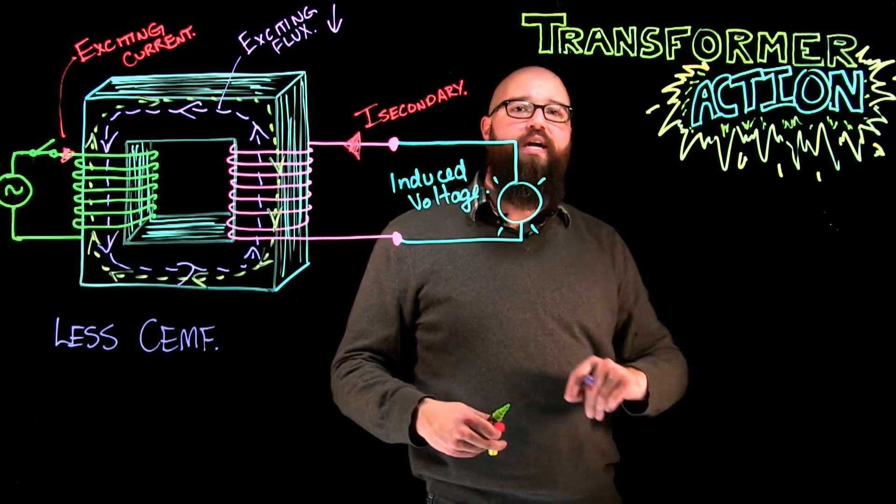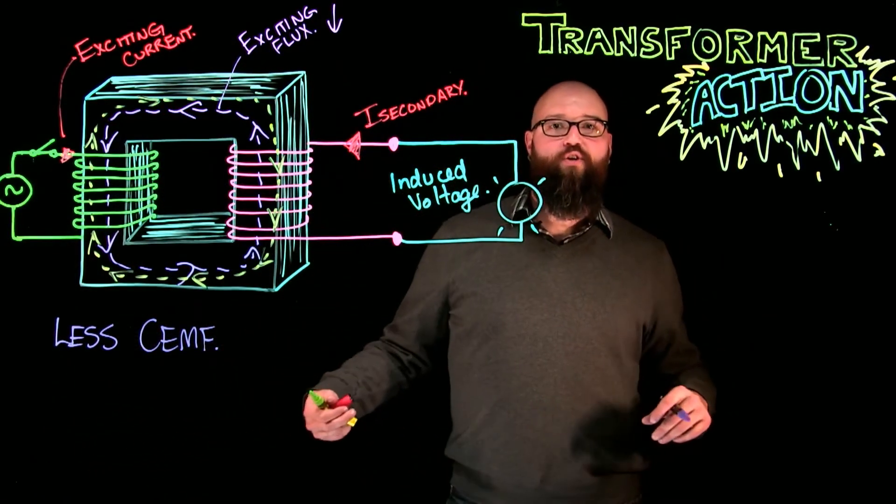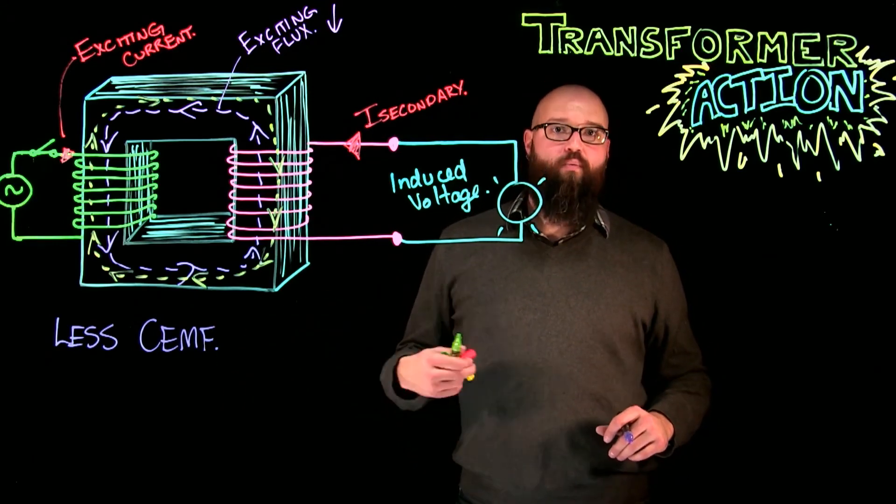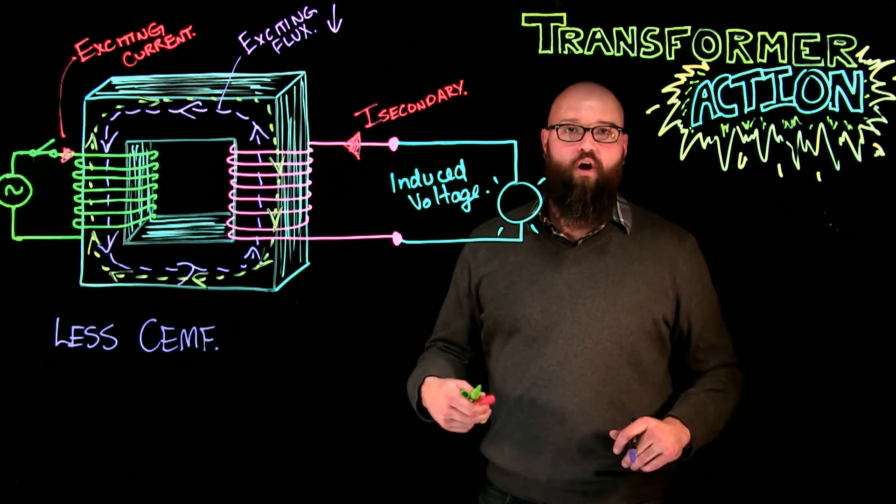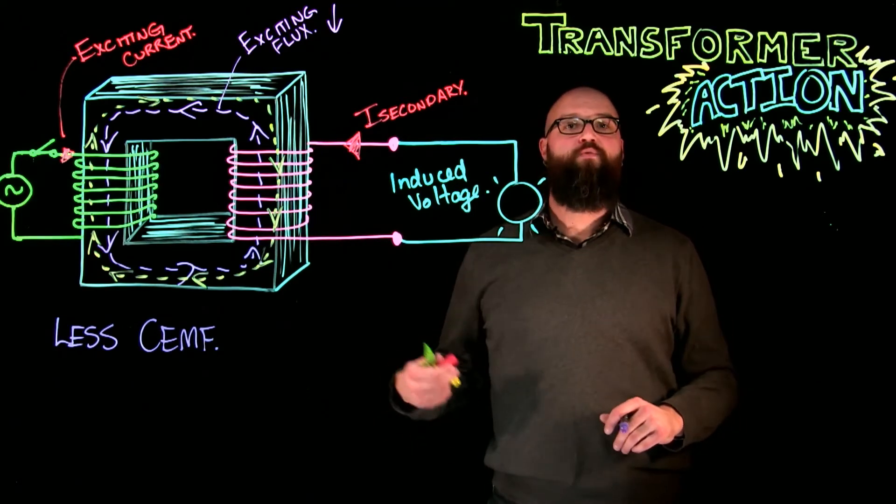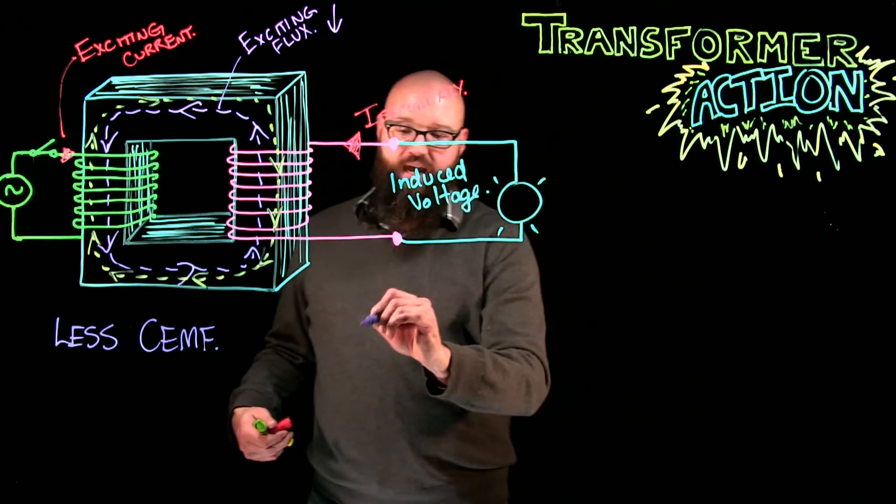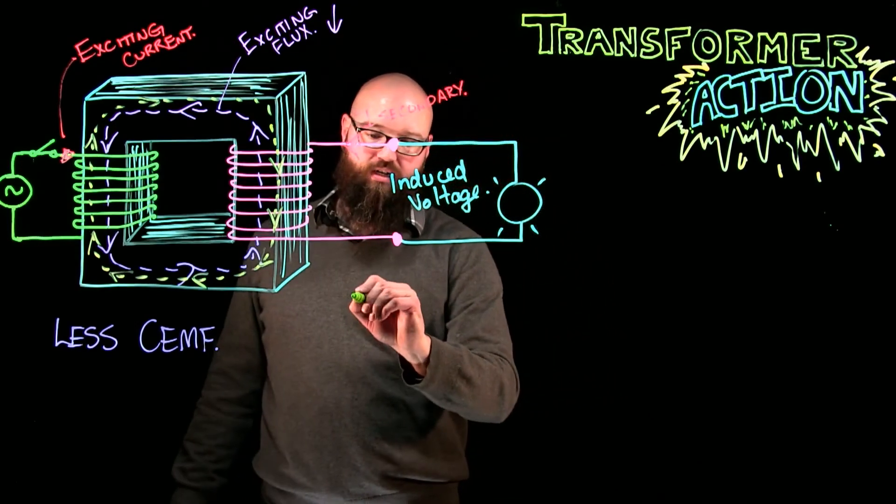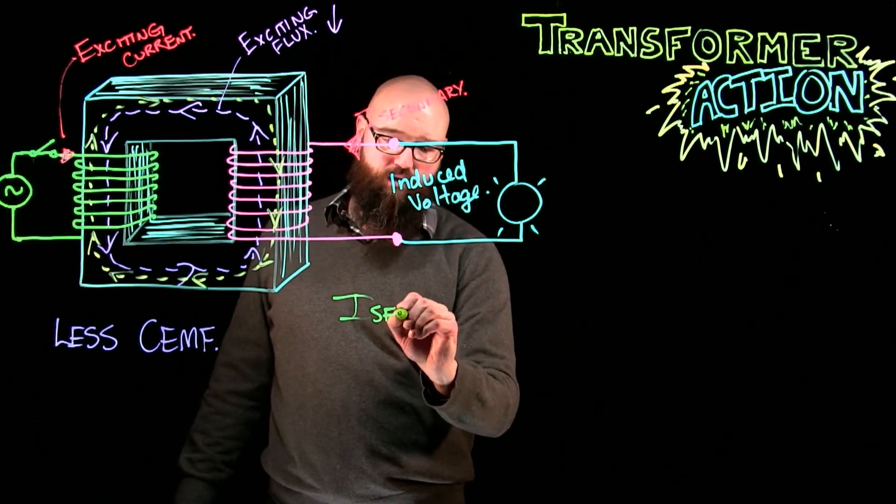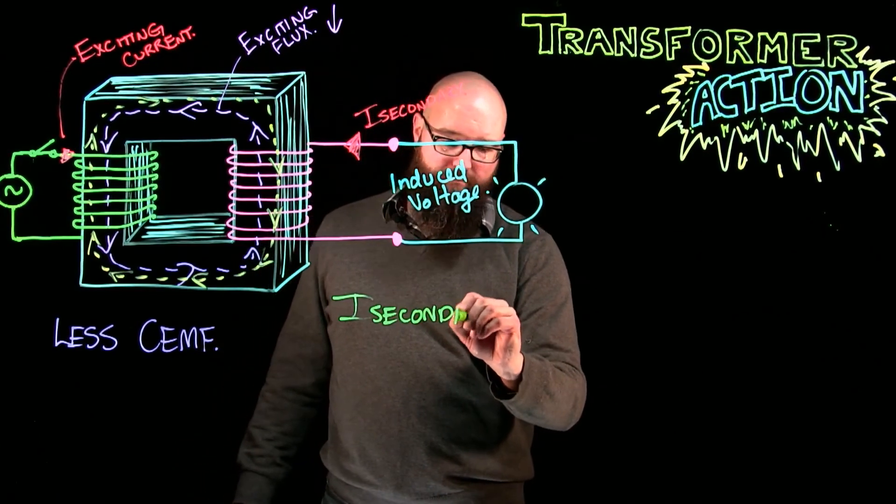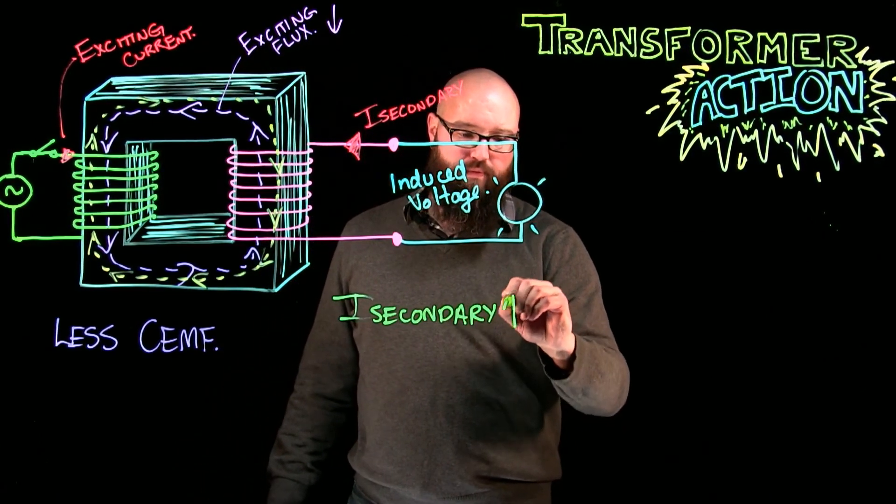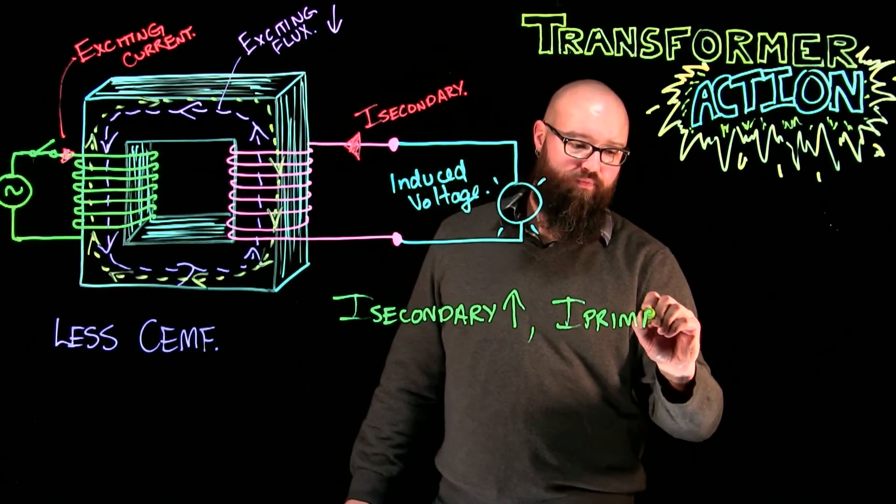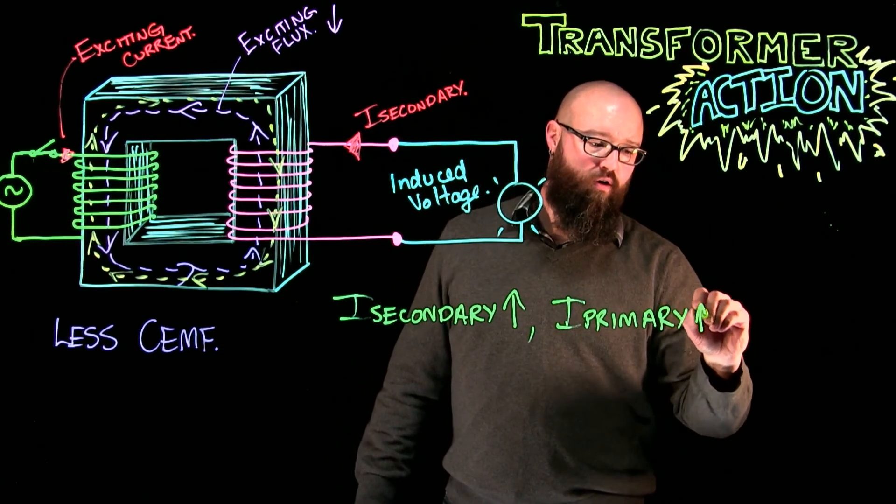And if I have less counter-EMF, I have less current opposing the applied current. And what we end up with is a rise in current on the primary as well. So, by increasing current on the primary, or secondary, current on the primary also increases.